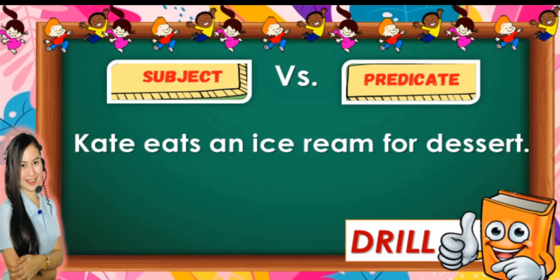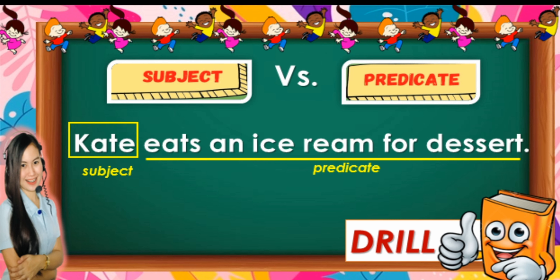Let's answer another sentence: Kate eats an ice cream for dessert. Very good! Can you find the subject? Our subject is 'Kate.' Good job! And what about the predicate? The word 'eats' is a verb. So our predicate is 'eats an ice cream for dessert.'